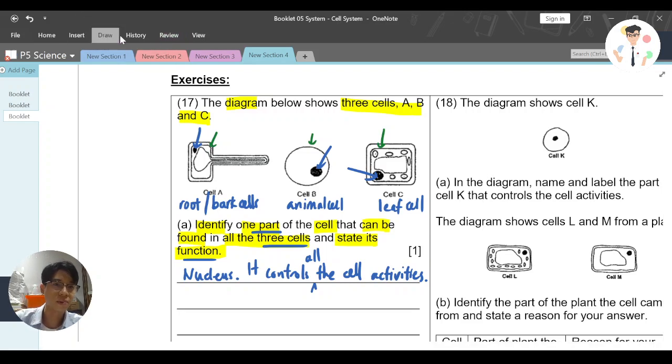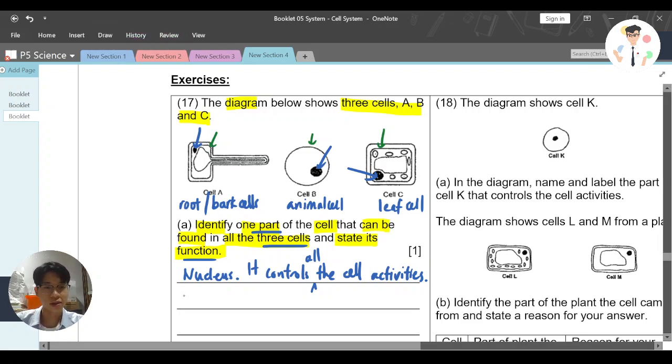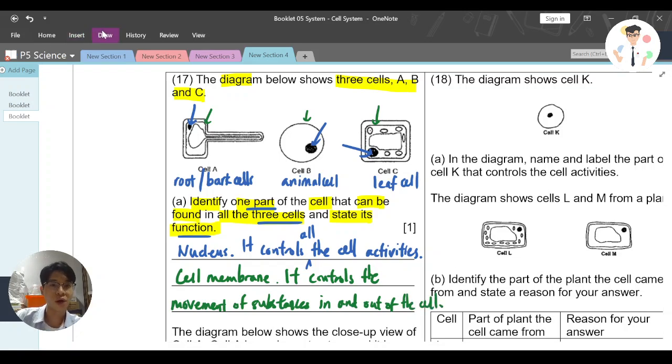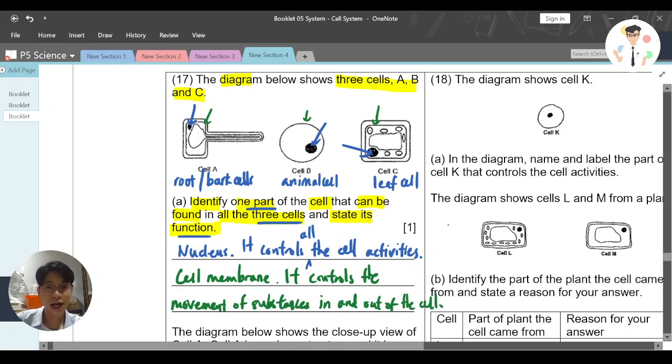And of course, if I as a teacher want to write cell membrane, then what should I write? Then you can just write cell membrane. It controls what? It controls the movement of substances, which includes food and waste, in and out of the cell. The question only asks for one, so choose one to write.